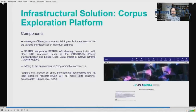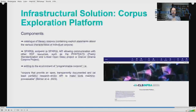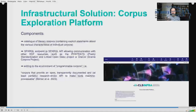Another component of CEP is a SPARQL endpoint. The SPARQL API allows communication with other resources stored in linked data databases, such as PostData or DraCor, the drama corpora project. The triangulation between CEP, PostData, and DraCor communicating via APIs is a first step toward the future development of programmable corpora, defined in CELES Infra as corpora that provide an open, transparent, documented, and at least partially research-driven API to make text machine-processable.